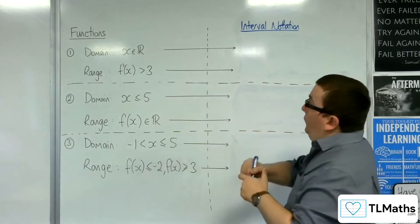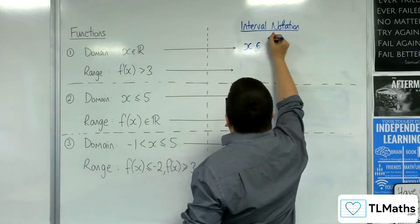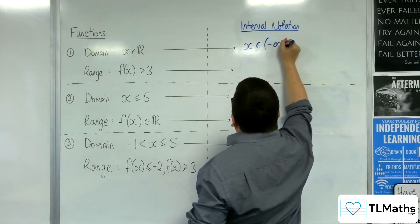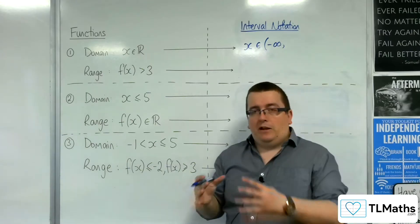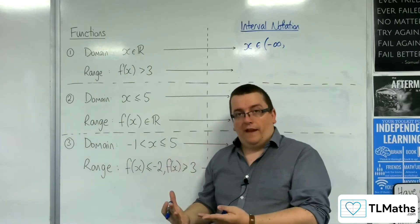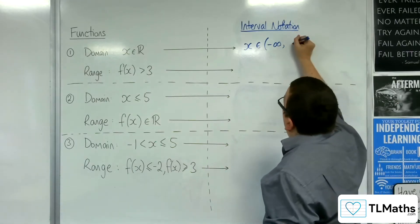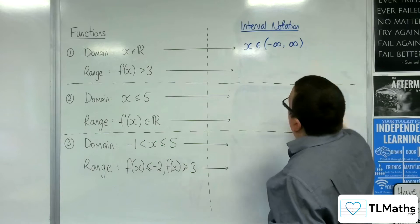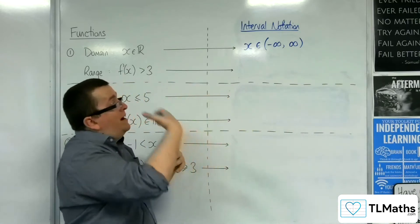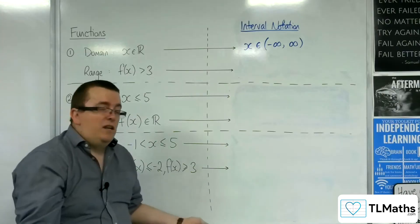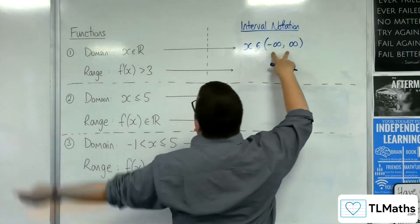So, we're saying x can be any number between negative infinity, and I'm using a curved bracket because I'm not including that value, because it's not a value, up to positive infinity, curved bracket, because infinity is not a value either. So, this is exactly saying this.